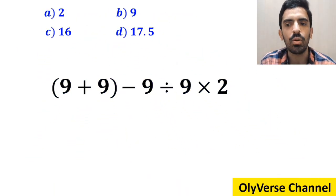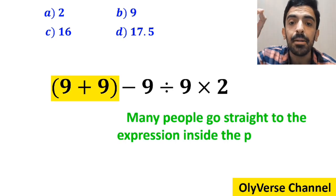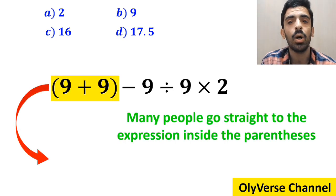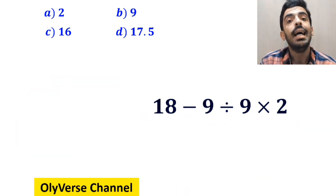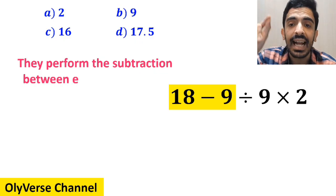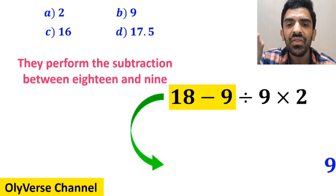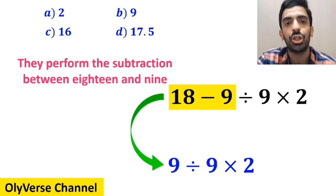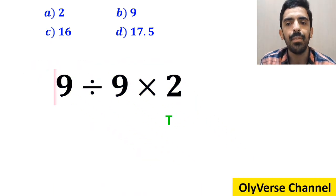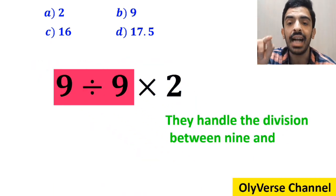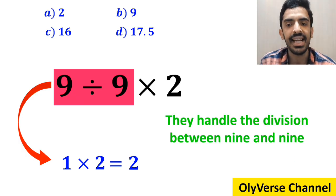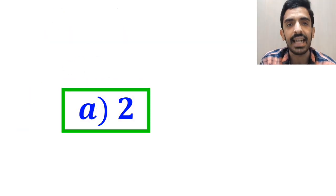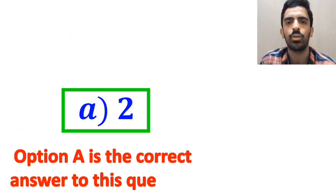In the first step, many people go straight to the expression inside the parenthesis and simplify the whole expression to 18 minus 9, divided by 9, then times 2. In the next step, they perform the subtraction between 18 and 9, simplifying to 9 divided by 9 multiplied by 2. In the final step, they handle the division between 9 and 9, writing the expression as 1 multiplied by 2, which gives them the answer 2. Without any hesitation, they quickly say that option A is the correct answer.